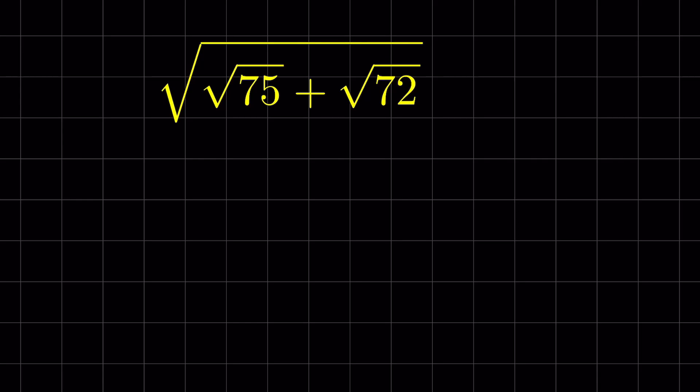We have the square root of 75 plus the square root of 72, all under a square root. How do we simplify this? First, we will try to simplify the radicals within the square root.